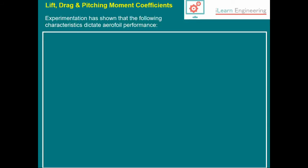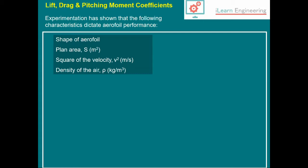From experimentation, the following characteristics dictate airfoil performance: the shape of the airfoil, the plan area (uppercase S for units meter squared), the square of the velocity (v squared in meters per second), and the density of the fluid or air (rho being the symbol).